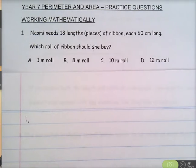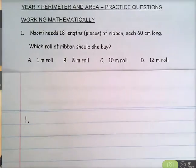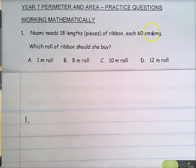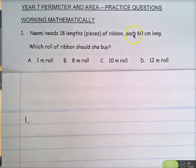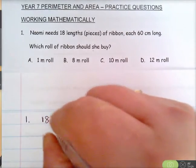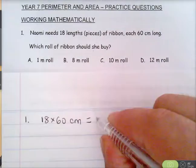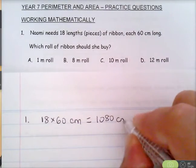Question one: Naomi needs 18 lengths of ribbon that are 60 centimeters long. Which roll of ribbon should she buy? First, we need to work out the total length she needs. We do 18 times 60 centimeters, which is 1080 centimeters.